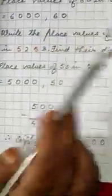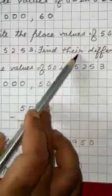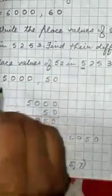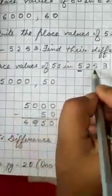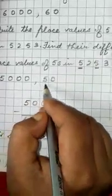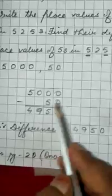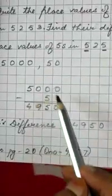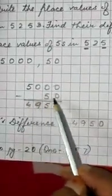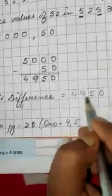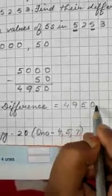Here you see how I have done. Write the place values of 5s in 5253. Place values of 5 is in 1000 place, so answer is 5000. And second 5 is in 10th place, so answer is 50. Now, both we have to subtract. 5000 minus 50, so difference will be 4950.